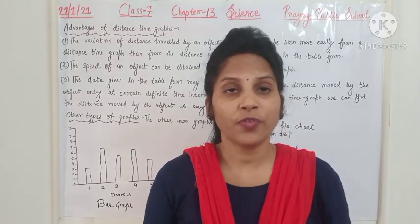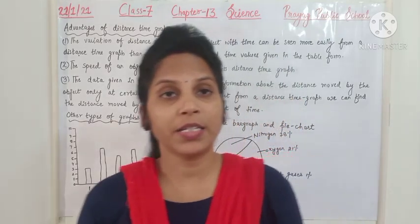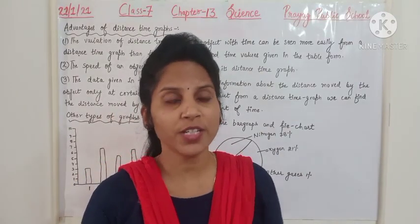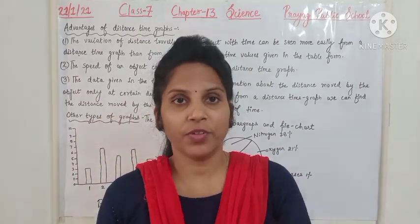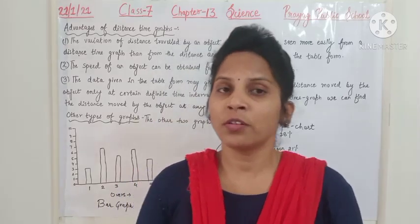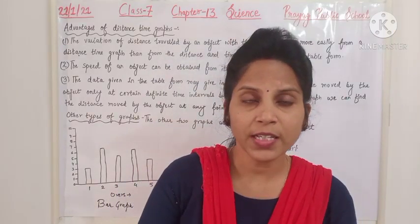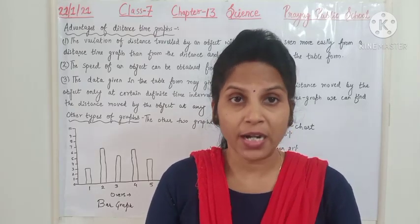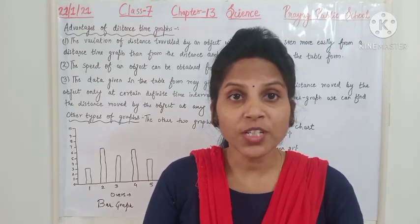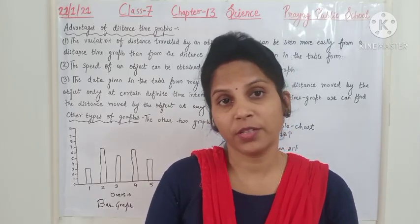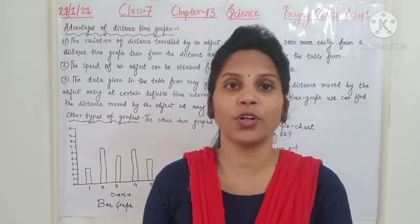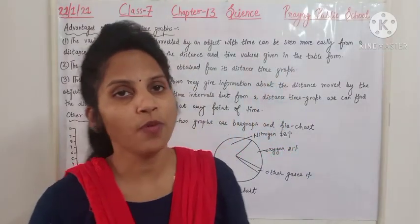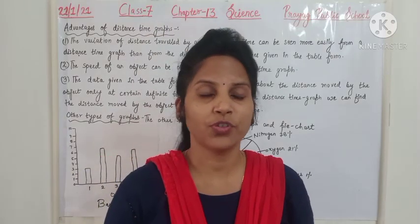With the help of a distance-time graph, we can find the speed or distance of the object at any point in time. For example, if an object is moving from 9:30 to 10:00 AM we can calculate its speed, and if the object reaches at 9:45 we can calculate the time as well using the distance-time graph.